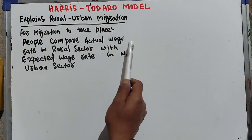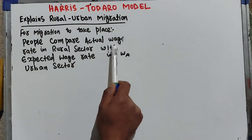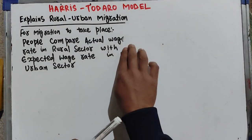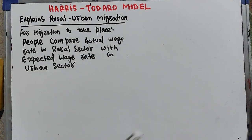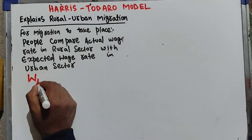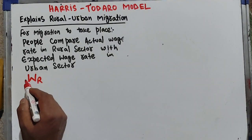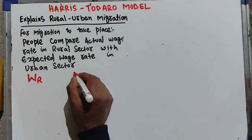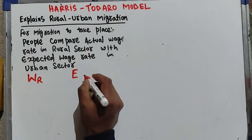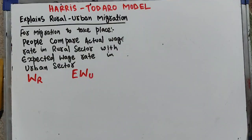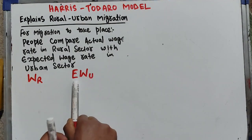For migration to take place, people compare the actual wage rate in the rural sector with the expected wage rate in the urban sector. Let me explain it with an example. The actual wage rate in the rural sector is denoted by WR, and we also have the expected wage rate in the urban sector.